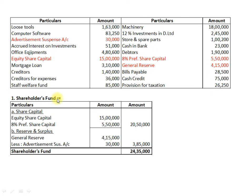Now let us work out Shareholders Fund with Particulars and Amount. The first component of Shareholders Fund is Share Capital, in which we have Equity Share Capital Rs.15,000 and 8% Preference Share Capital Rs.5,50,000. So our total Share Capital amounts to Rs.20,50,000. The second component is Reserves and Surplus. In the financial data, we have General Reserve Rs.4,15,000 and Advertisement Suspense Account Rs.30,000.